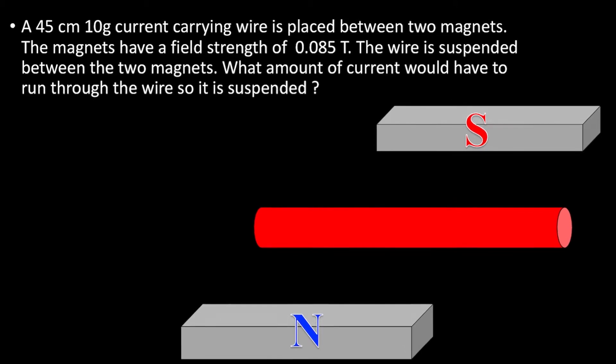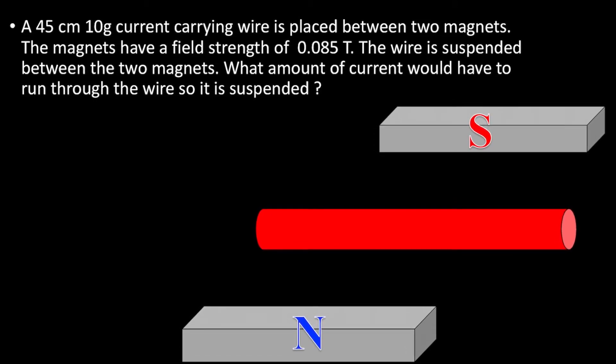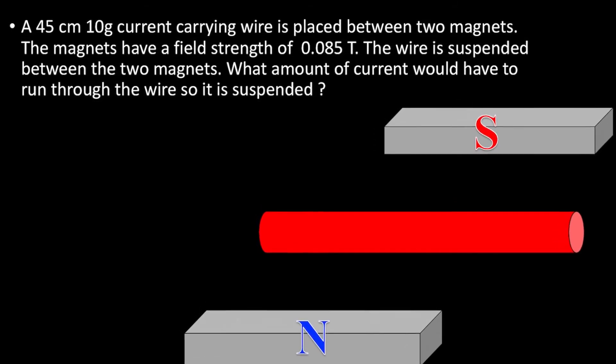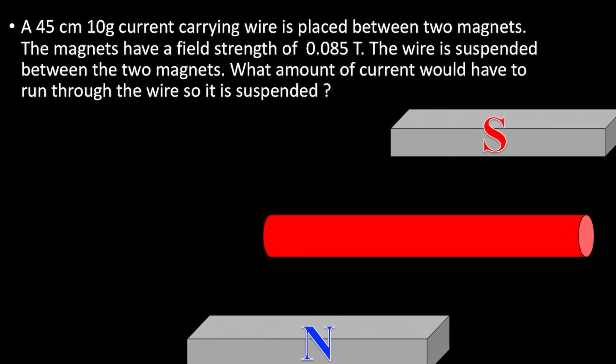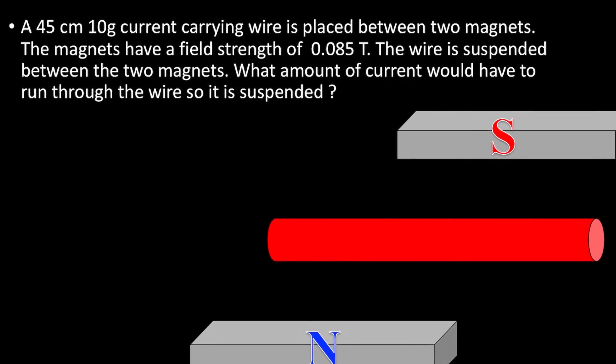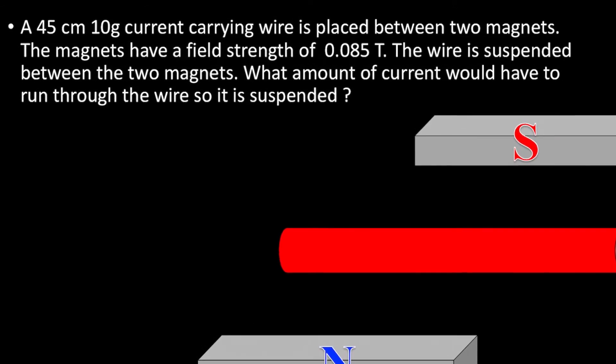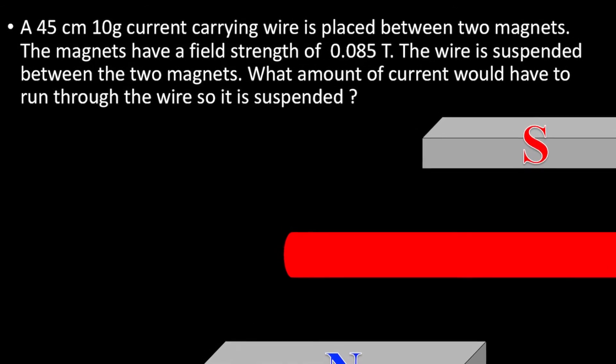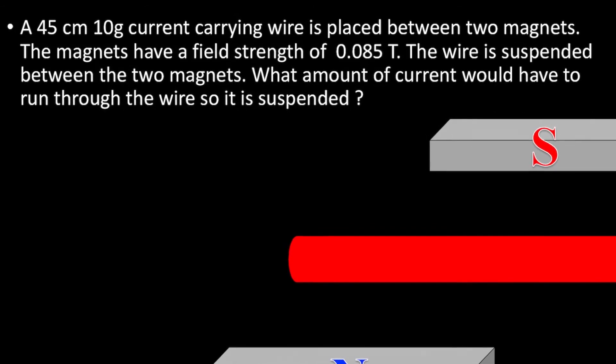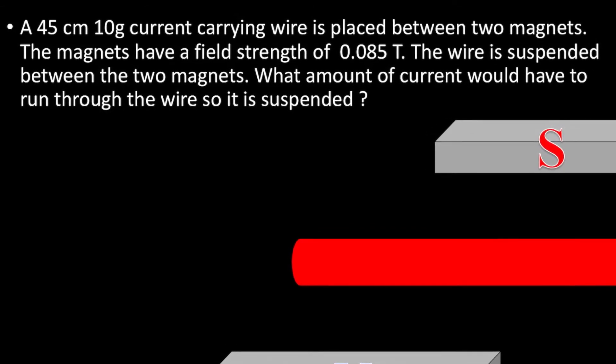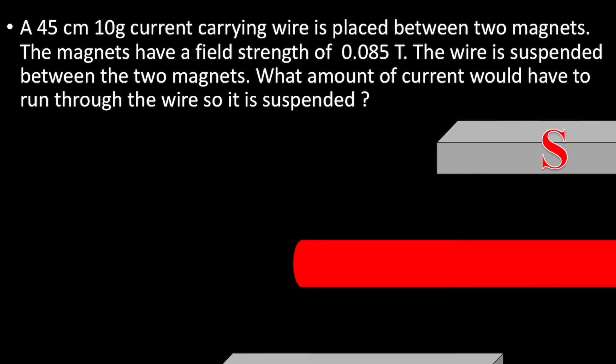Let's take a look at this example that says a 45 centimeter, 10 gram current carrying wire is placed between two magnets. The magnets have a field strength of 0.085 Tesla, and the wire is suspended between the two magnets. Similar to the suspending of charged particles we saw before. What amount of current would have to run through the wire so that it is suspended.